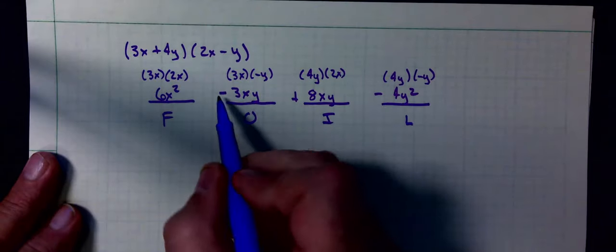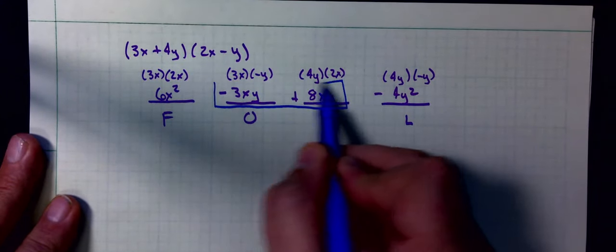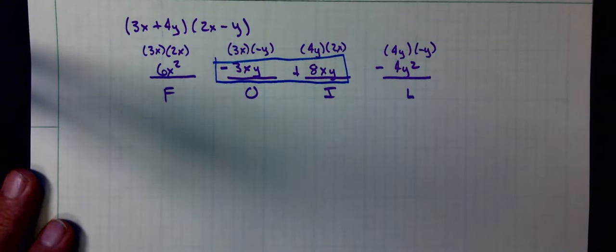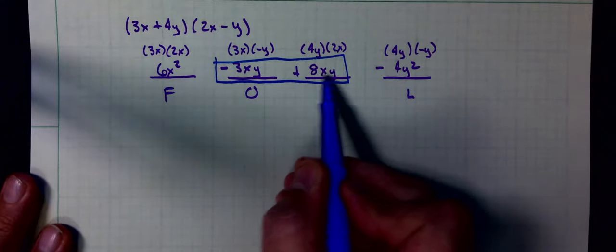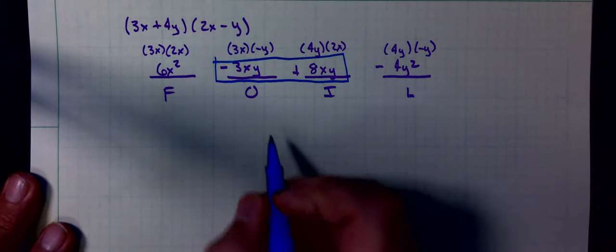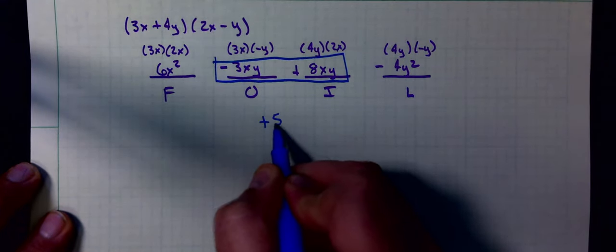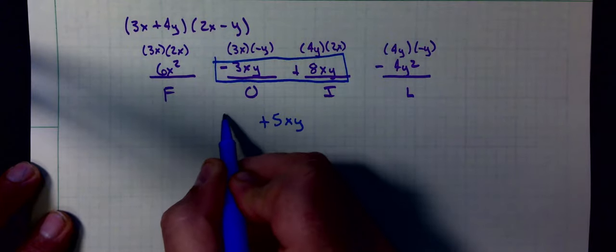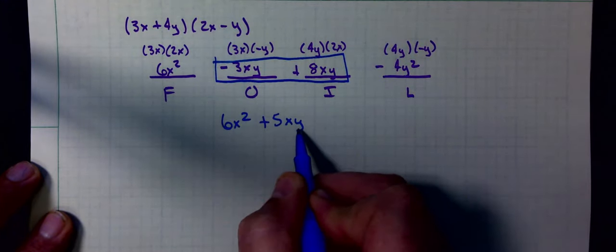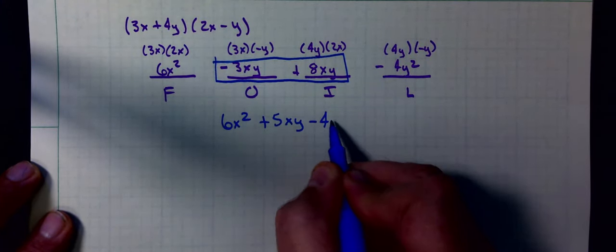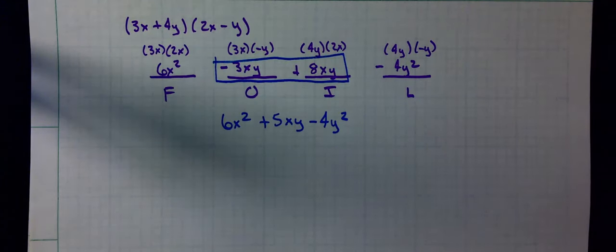Notice here in the middle these two terms are like terms. Combine them: 8 of something minus 3 of something is 5 of that something. So the answer is 6x squared plus 5xy minus 4y squared. And that helps us.